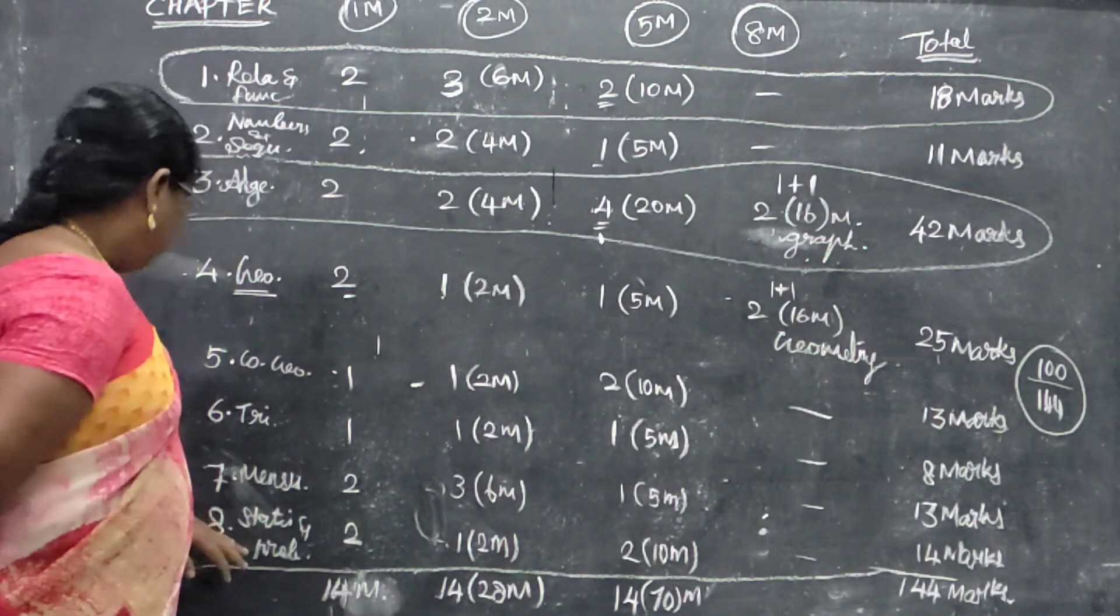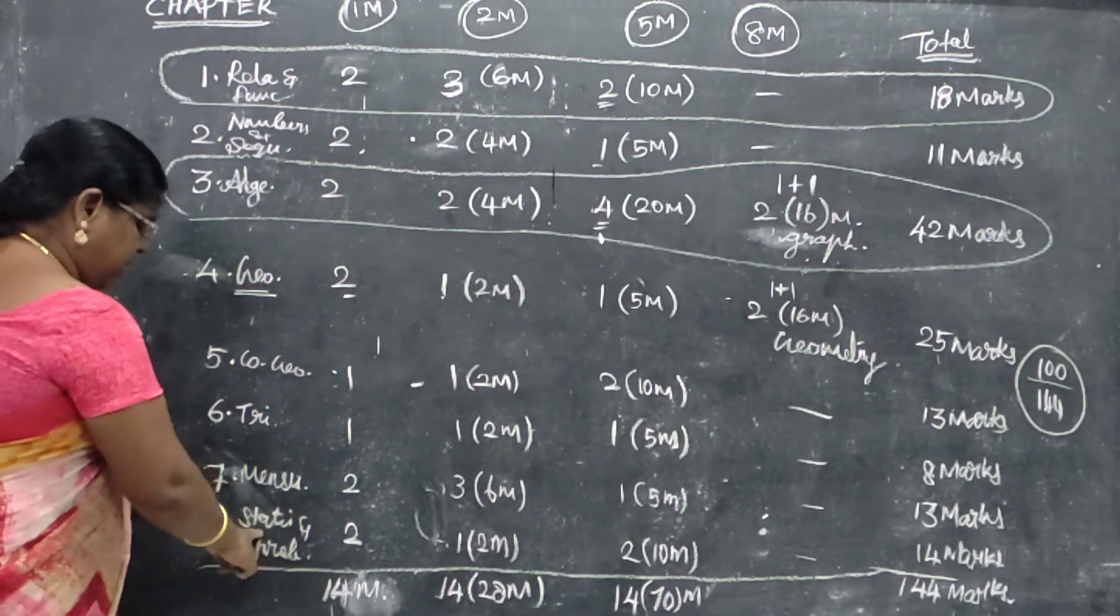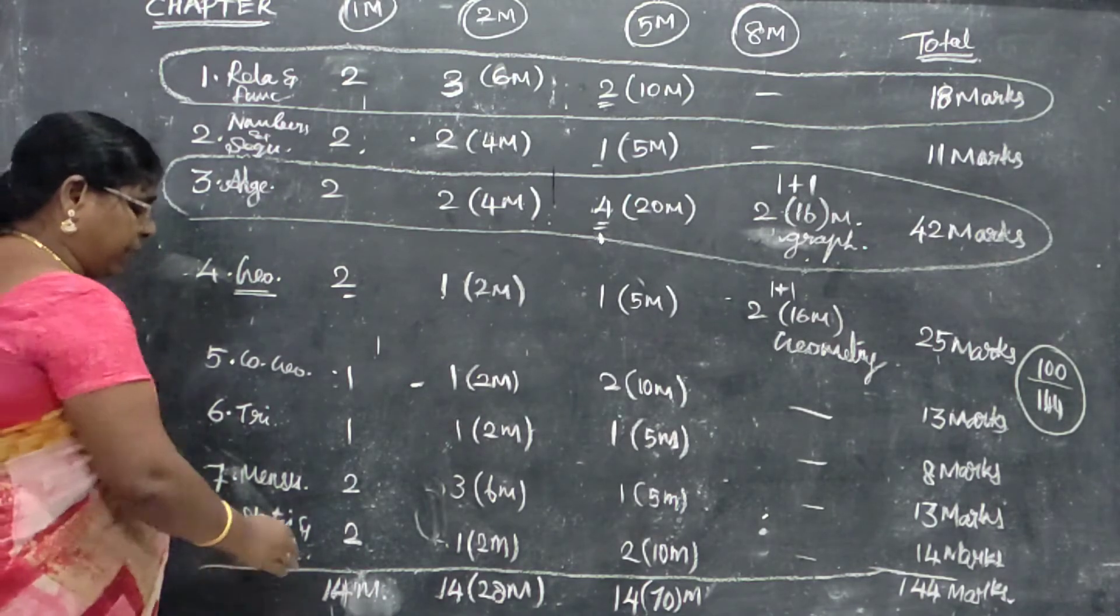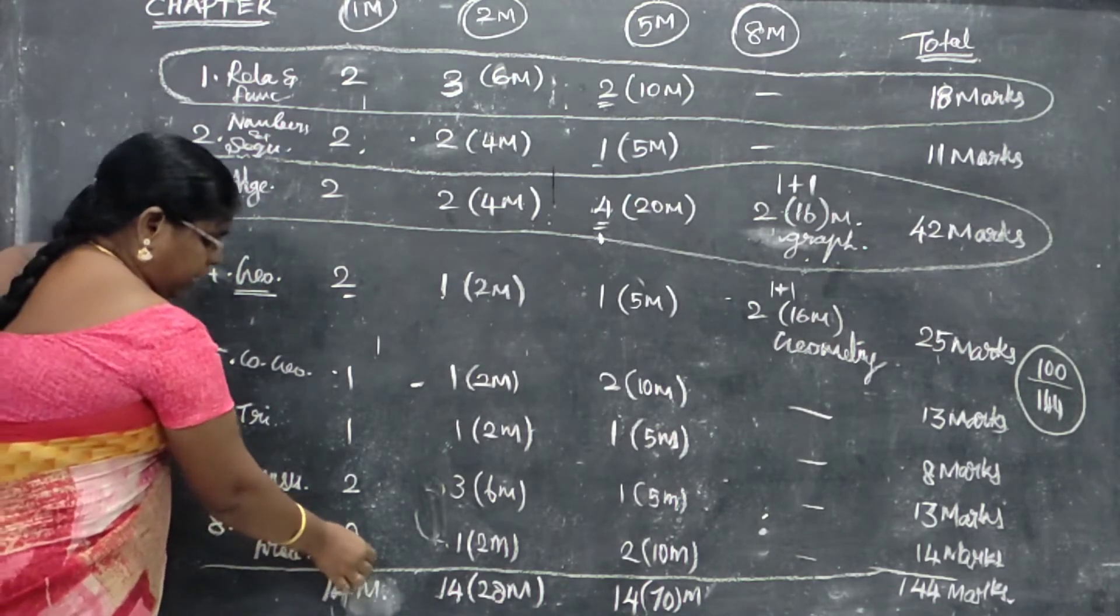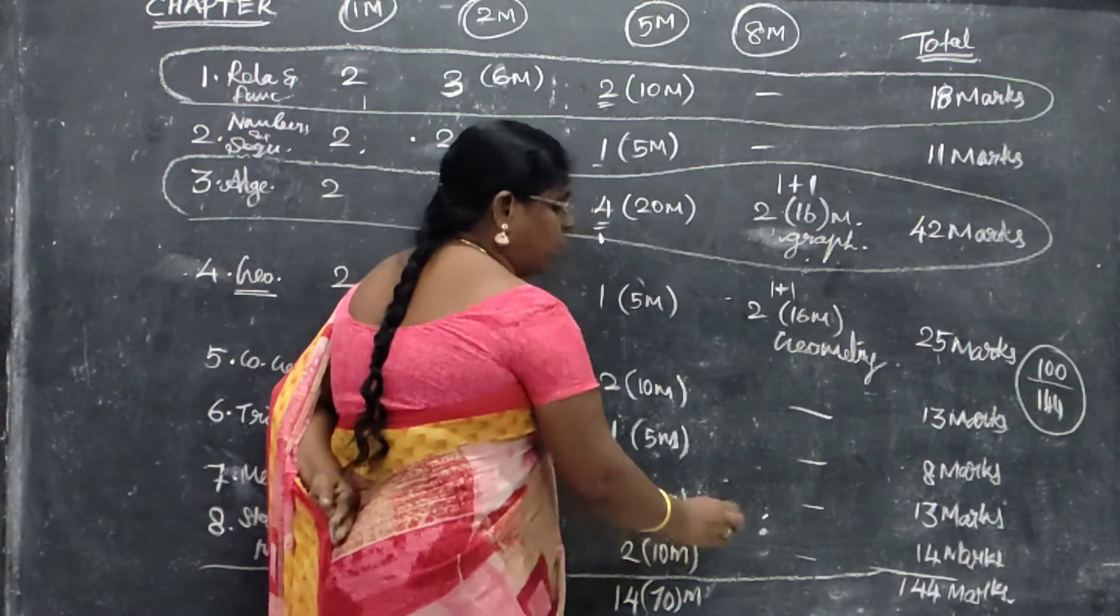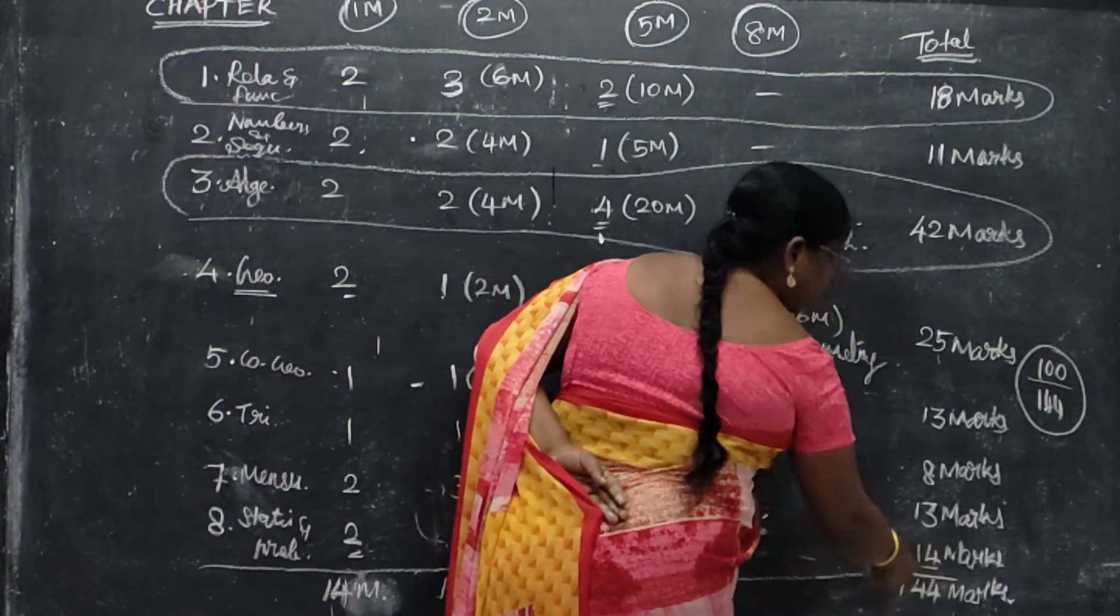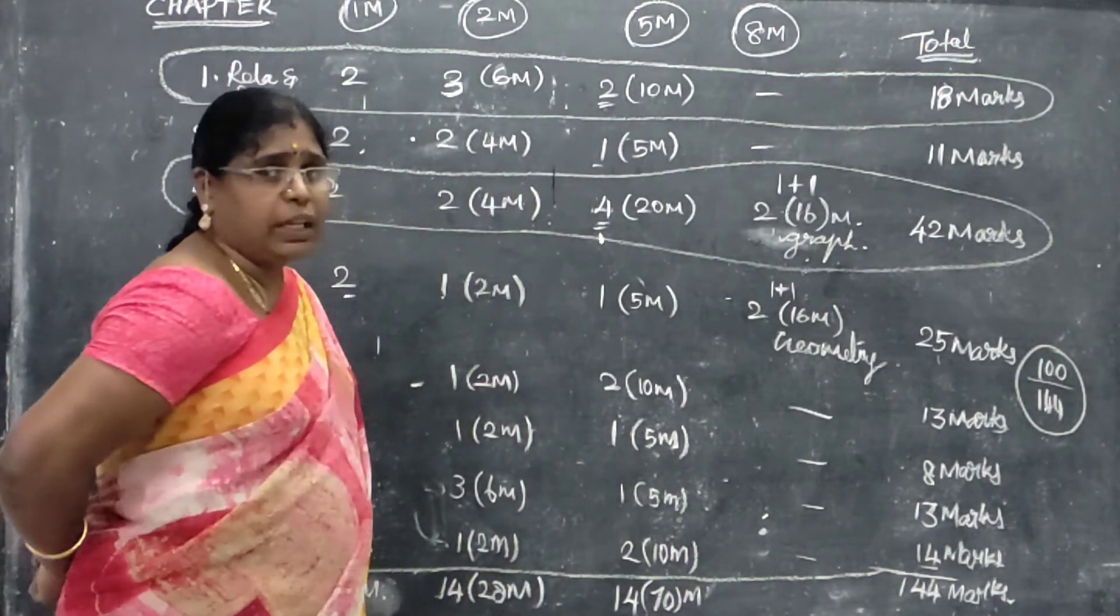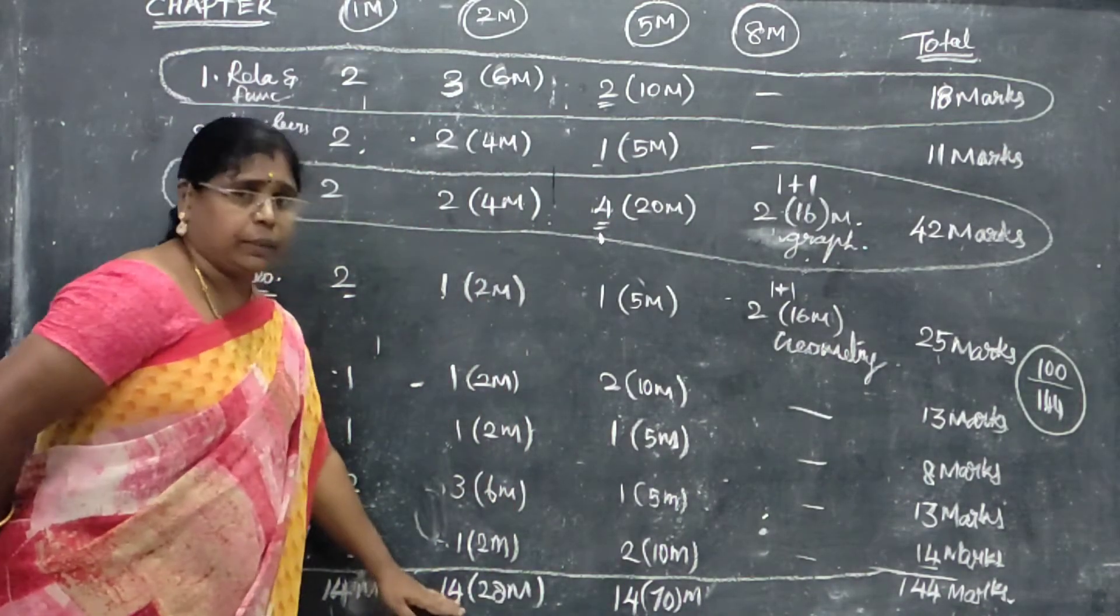Next is Statistics. Statistics and Probability, eighth chapter, last chapter. Two, one marks. One, two marks. Two, five marks. Total marks.